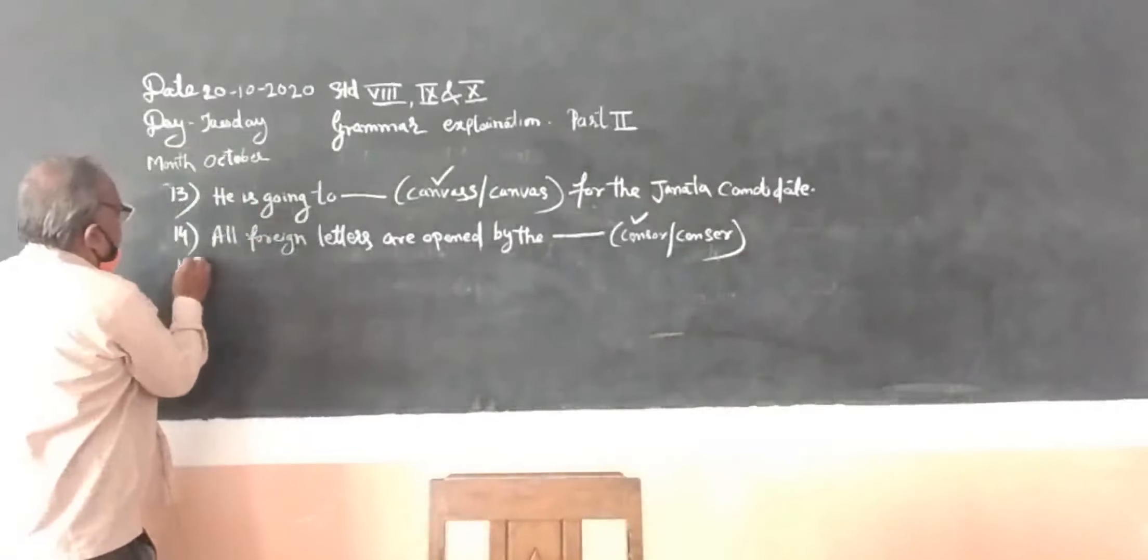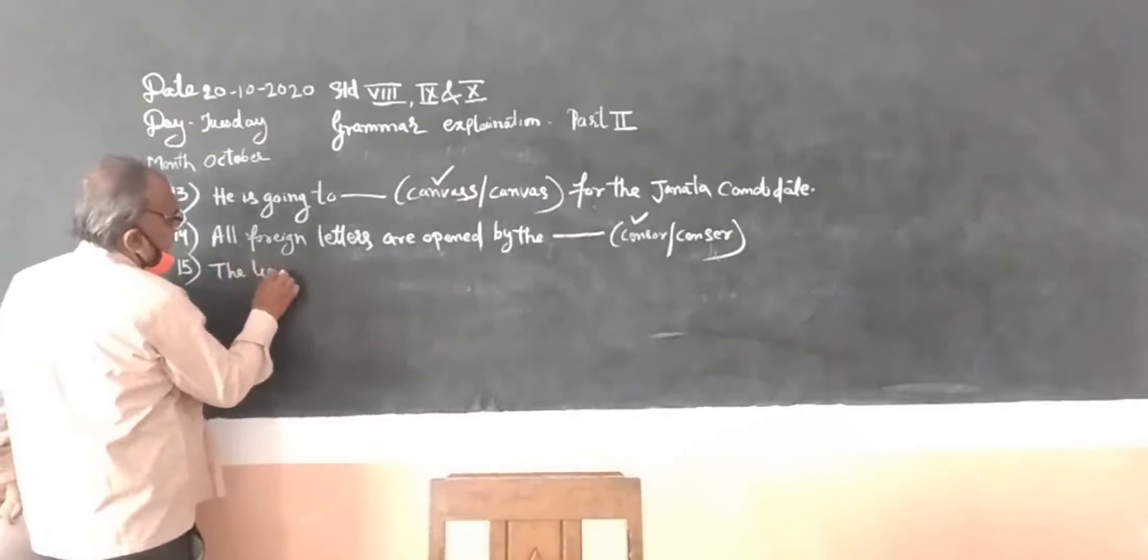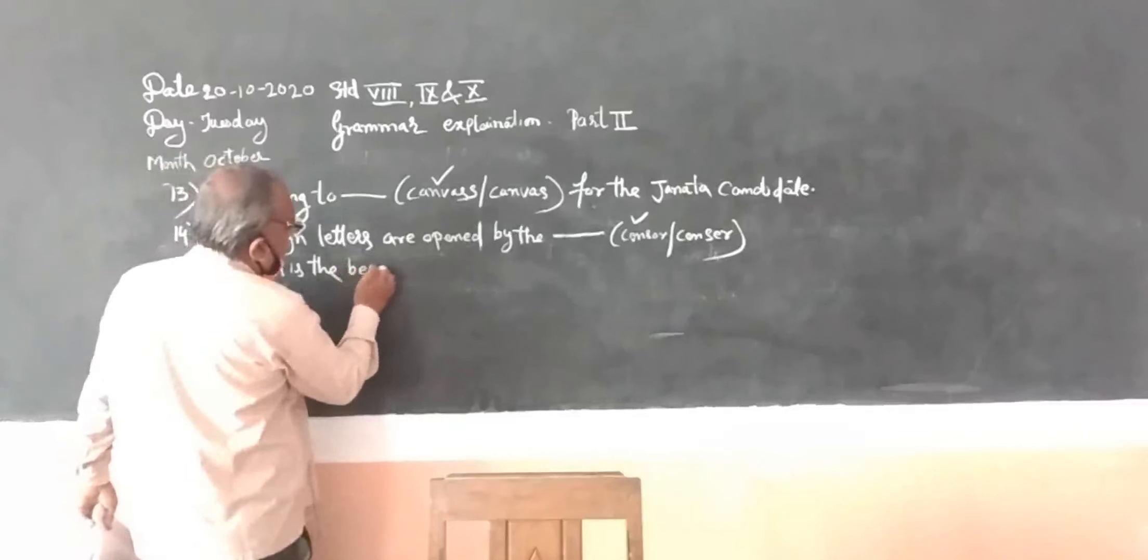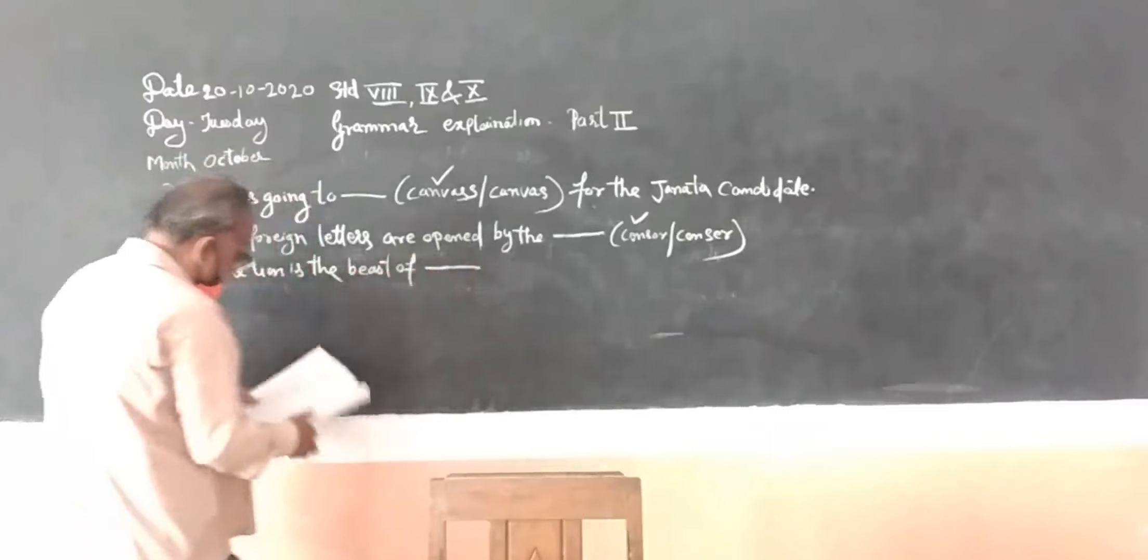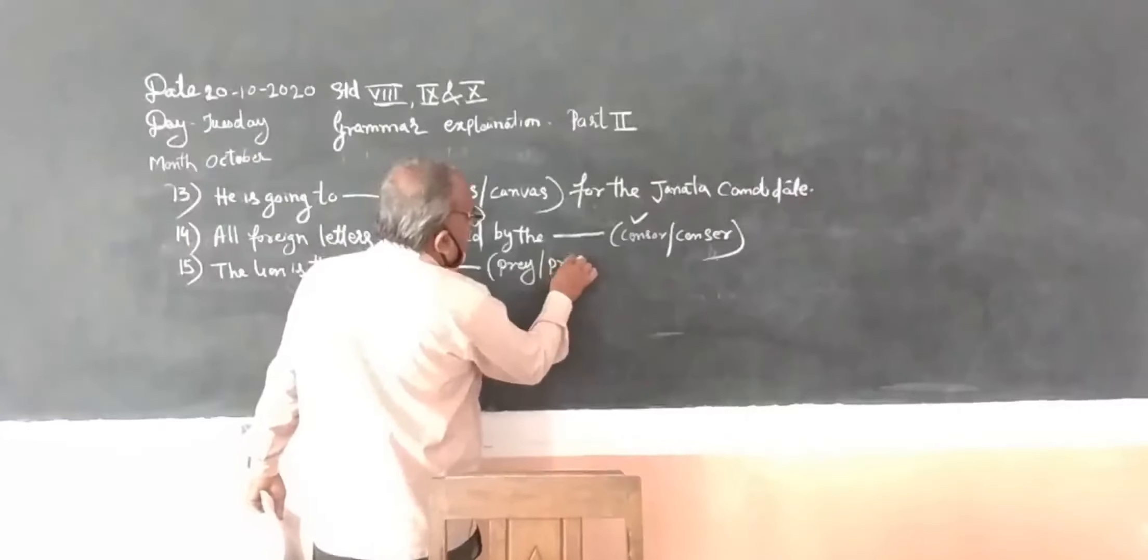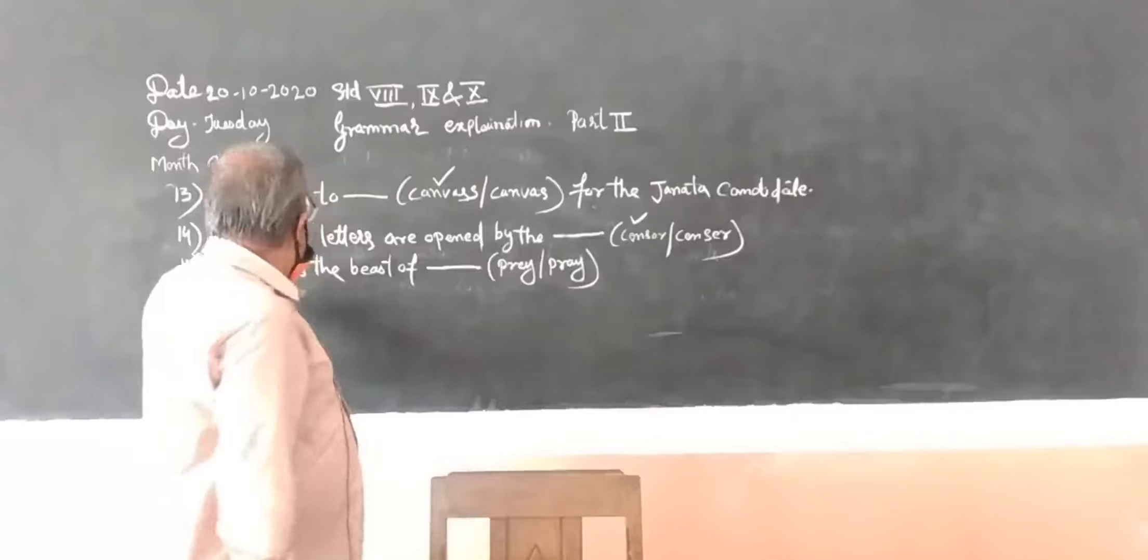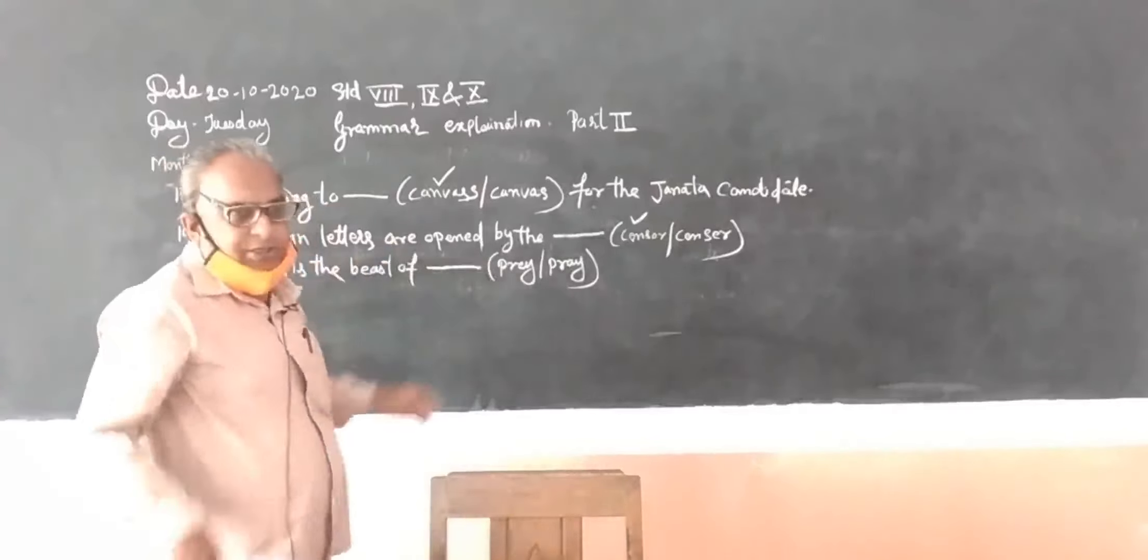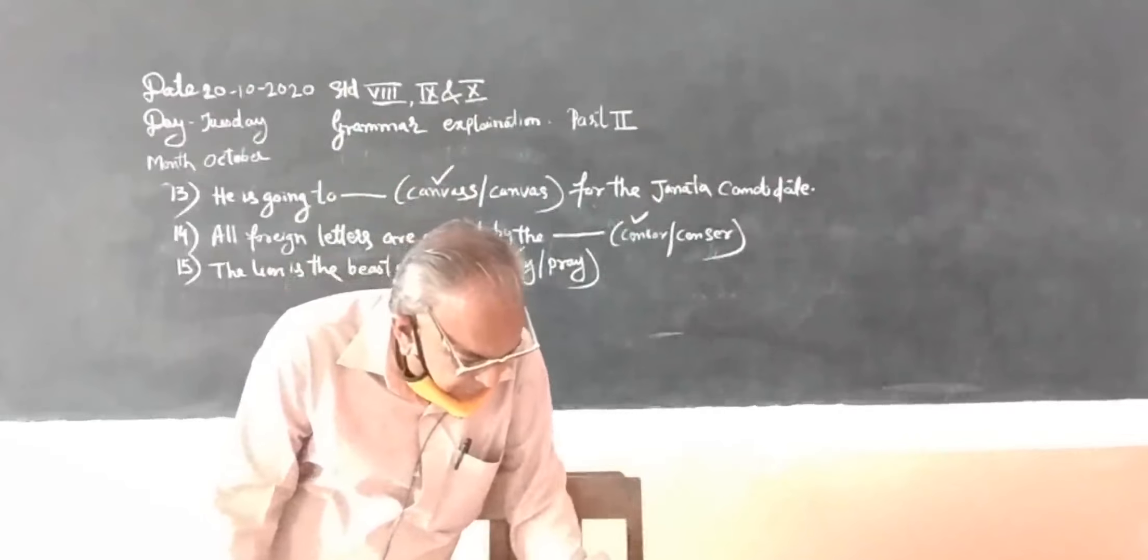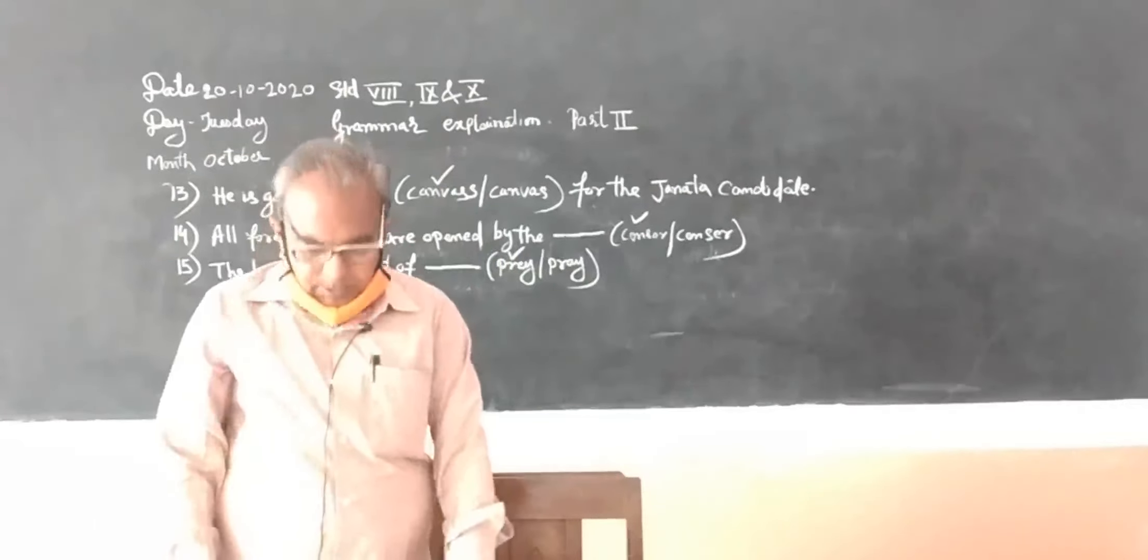And the fifteenth one, the last one: the lion is the beast of P-R-E-Y prey and P-R-A-Y pray. Now which prey we have to use? This pray means praying God, this prey means hunting. P-R-E-Y, so what is the behavior of the lion? It is prey, P-R-E-Y.